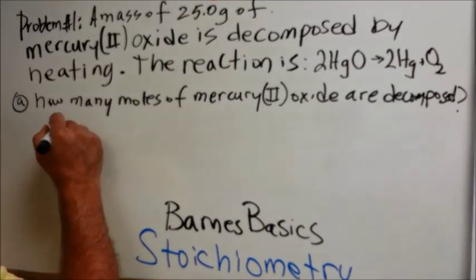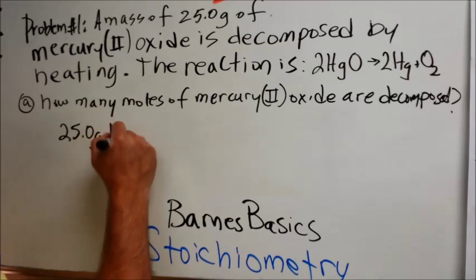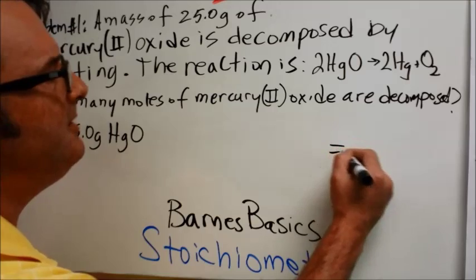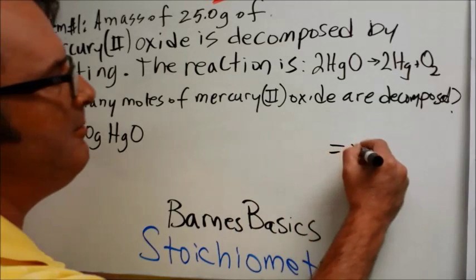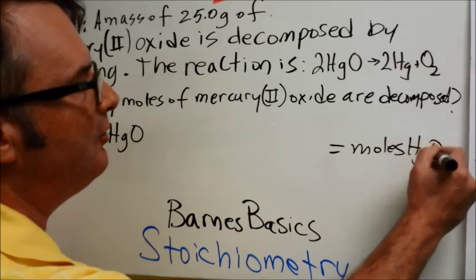So we are given that we have 25.0 grams of mercury oxide, and we are supposed to determine the moles of mercury oxide.